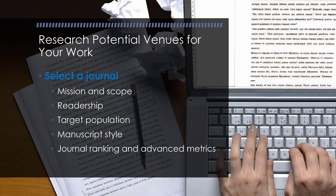The mission and scope describe what the journal was created to do and what types of works they look to publish. Make sure that your manuscript matches the mission and scope of the journal. For example, if you have a manuscript about a counseling intervention for individual clients, it's probably not going to be well received at the Specialist for Group Work journal.